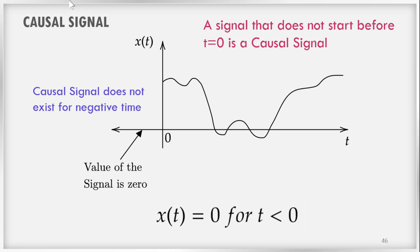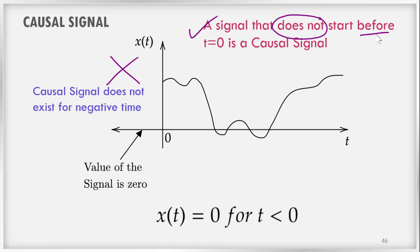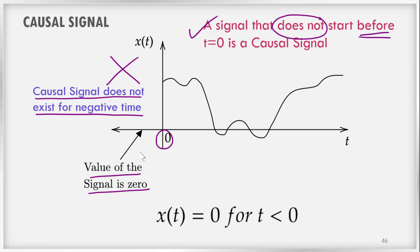A signal that does not start before time t=0 is called a causal signal. A causal signal does not exist for negative time — the value of the signal is 0 in the negative time axis. These are the definitions of causal signals.